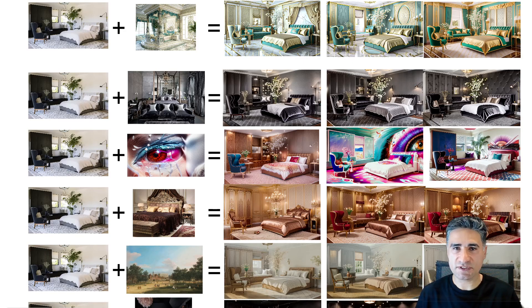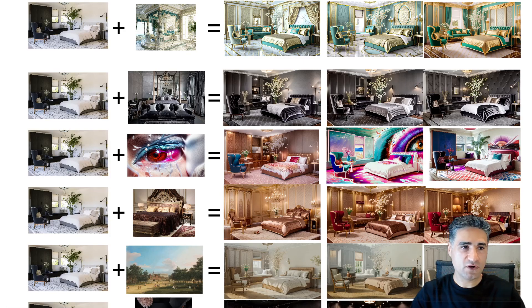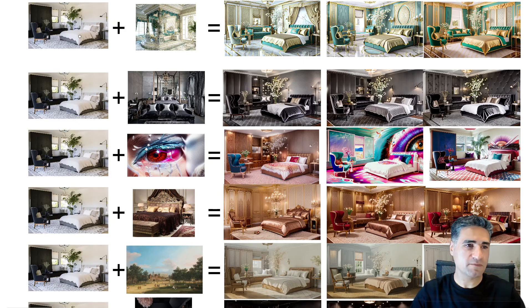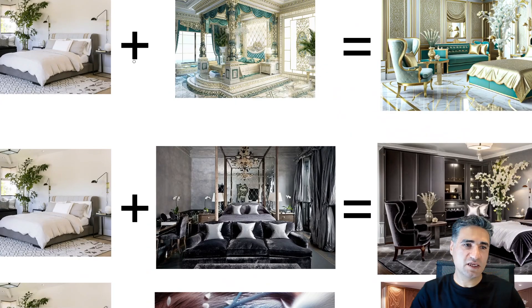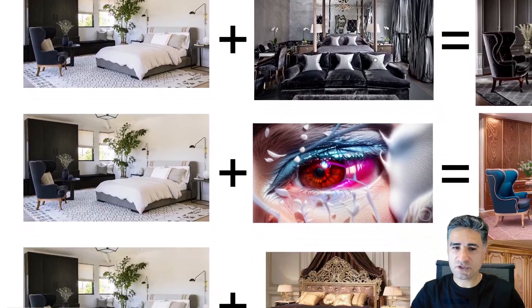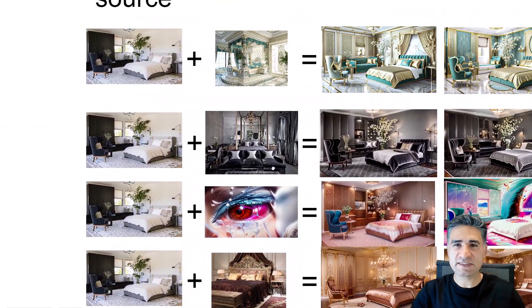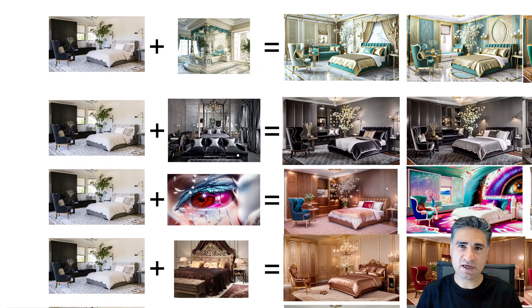I'm working with Stable Diffusion and ComfyUI in this workflow that I've designed. You can take a photo or make a simple render from your scene — it can be a render or a photo, it doesn't matter. After that you can select an image style — it could be a bedroom, a painting, or another photo. This system can extract the design style and also extract the color theme.